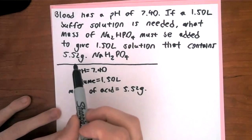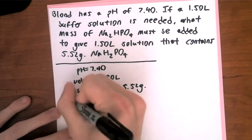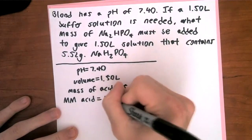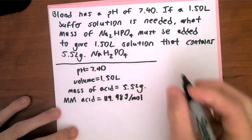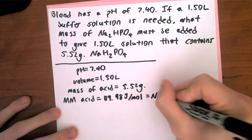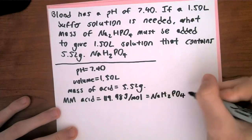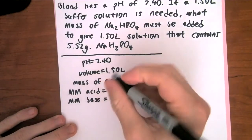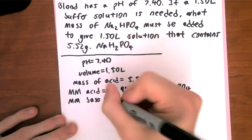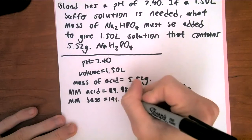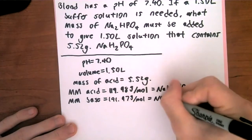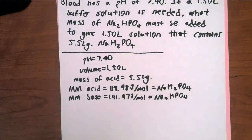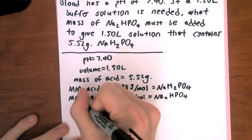So the mass of our acidic character is 5.52 grams. The molar mass of my acid — NaH₂PO₄ — works out to 119.98 g/mol. This is my acidic character in the problem. The molar mass of my base — which is the conjugate base Na₂HPO₄ — is 141.97 g/mol. I've written down everything I know, including information not directly asked for, like molar masses.